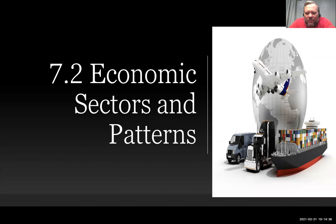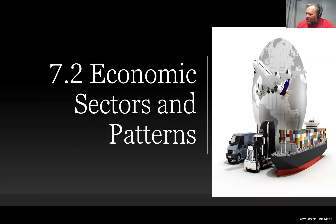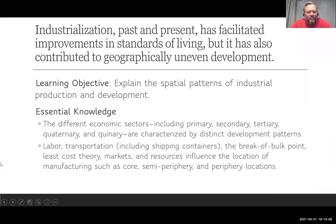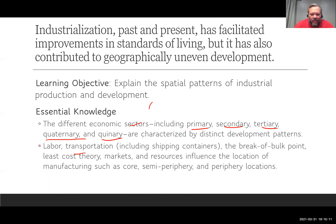This is 7.2, Economic Sectors and Patterns. We're looking at how we classify different parts of the economy, and then the patterns — where manufacturing is located around the world and why it's located in different areas. We're going to cover primary, secondary, tertiary, quaternary, and quinary sectors.